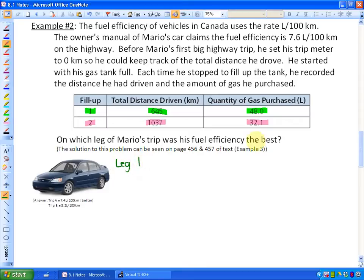What we're looking for is eventually to have liters per 100 kilometers. So that's the goal. It's always good with these problems to have the goal in mind. Since we need liters per hundred kilometers, we're going to do liters per kilometers. So in leg number one he purchased 48 liters in order to travel 645 kilometers.